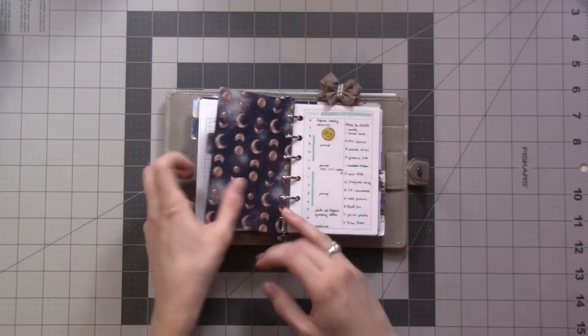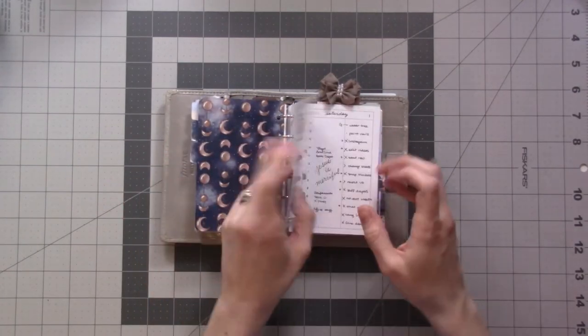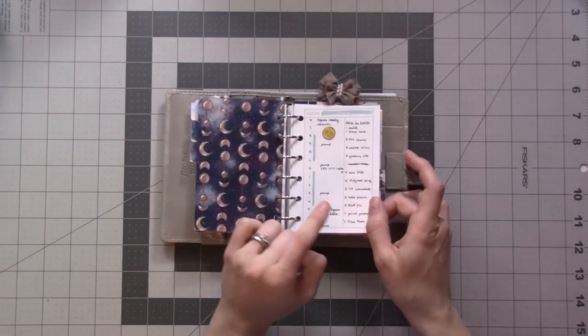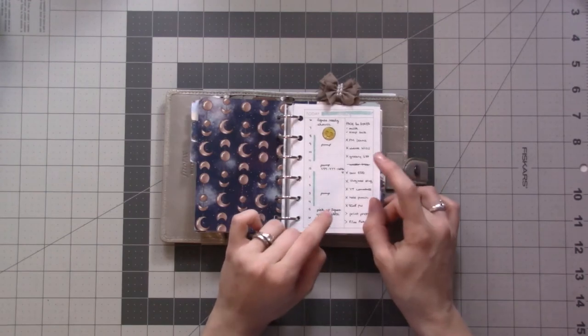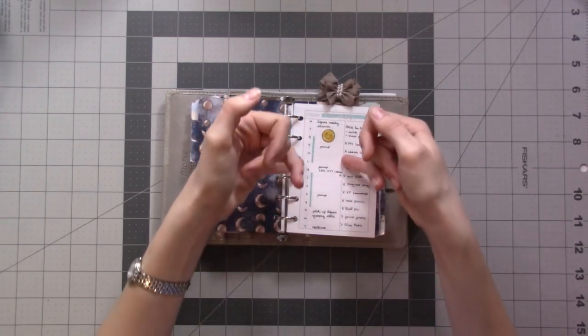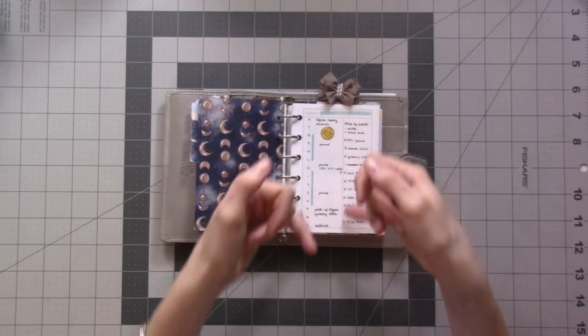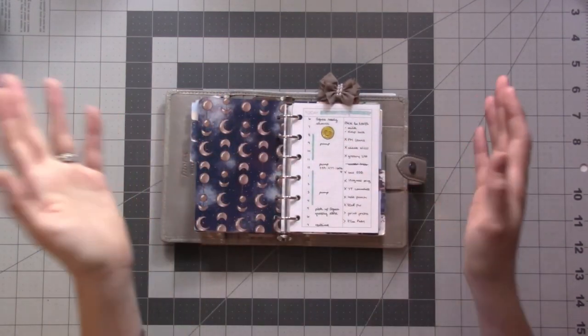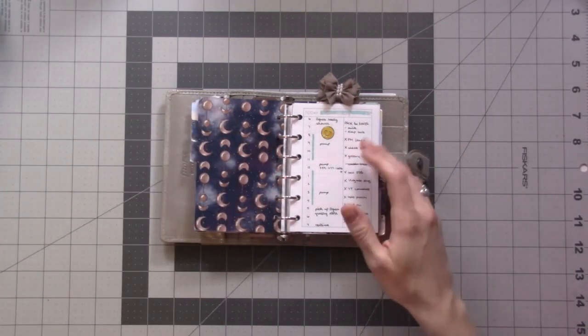I've been using these freebie dailies from peanuts planner co. These are available on her Facebook page. If you go to the album with the freebies, this column here is the width of Erin Condren stickers. I don't have any Erin Condren stickers, but that's what this is.